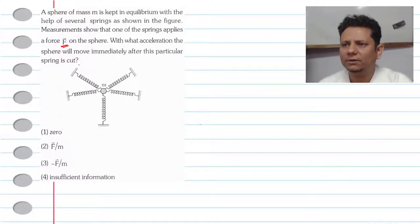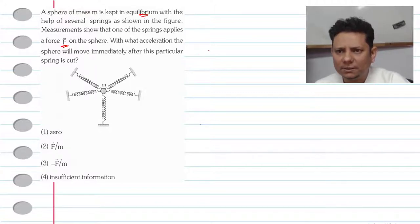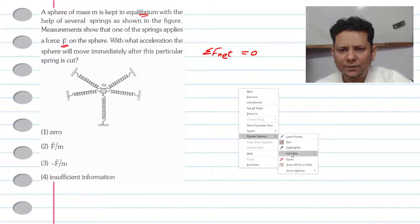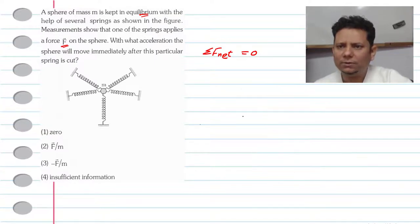The options are: zero, F by m, minus F by m, or insufficient information. This is a simple question based on basics. We'll begin. The sphere is in equilibrium, which means that the net force from all springs is equal to zero. So the net force from the spring system is equal to zero because the spring system is in equilibrium.